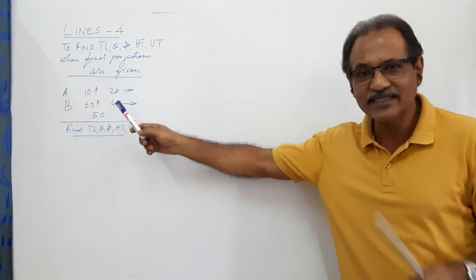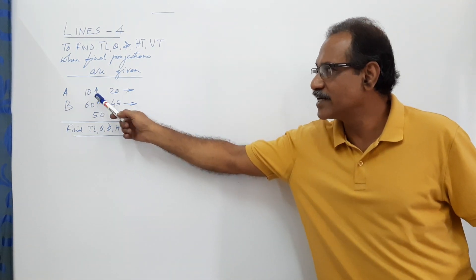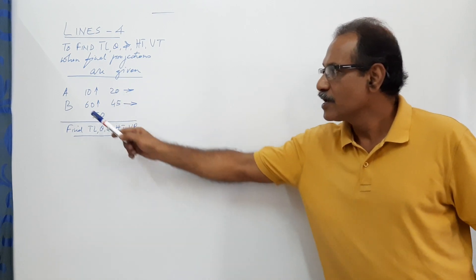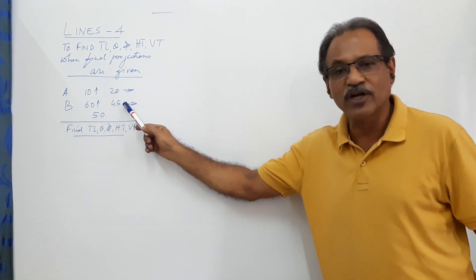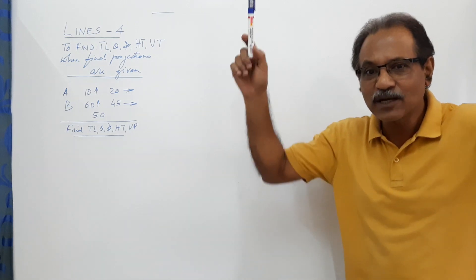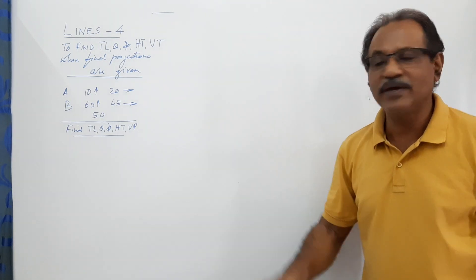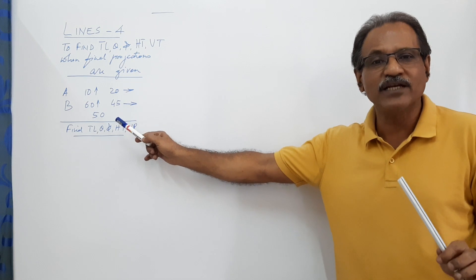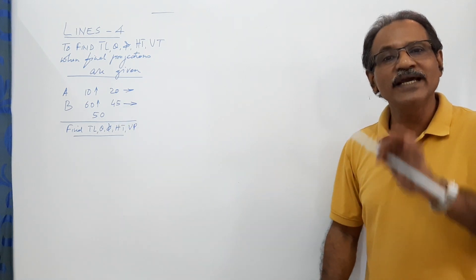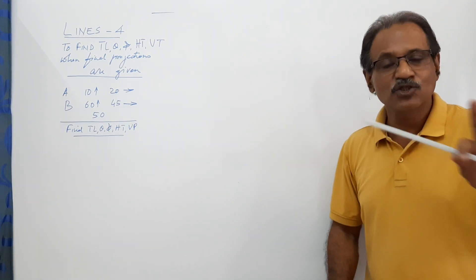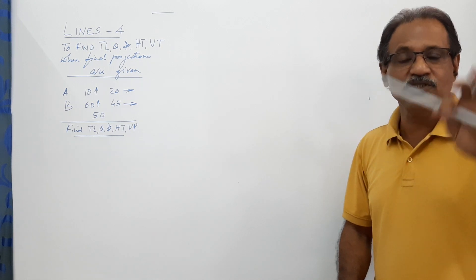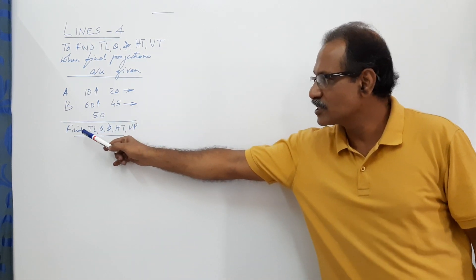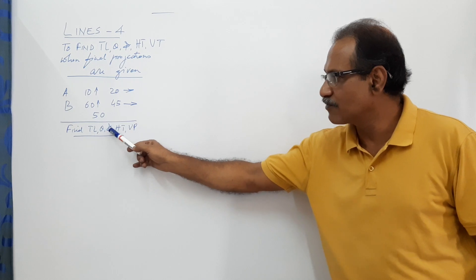I have given a typical question. This is the abstract of the question: A is 10mm above HP and 20mm in front of VP. B is 60mm above HP and 45mm in front of VP. The projectors of A and B are 50mm apart. You are asked to draw the projections and find out true length, theta, phi, ht and vt.